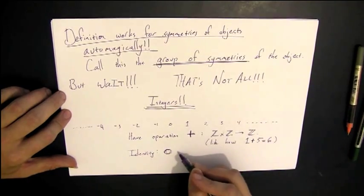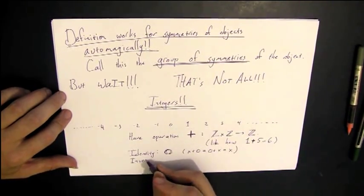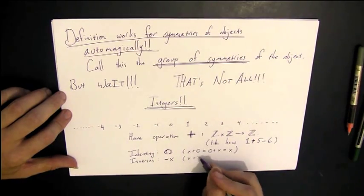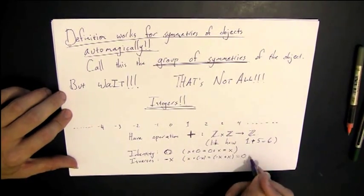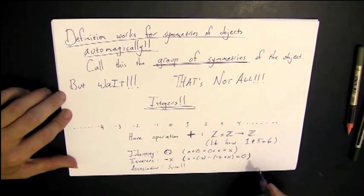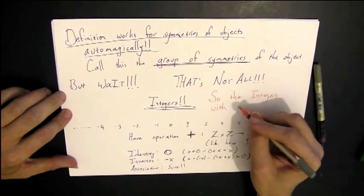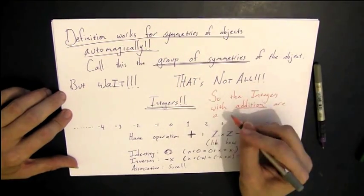There's an identity integer, which we know is 0, where x plus 0 is 0 plus x equals x. Inverses are just negative numbers. If you add a number to the negative number, you get back to 0, back to the identity. And we know that addition of integers is associative. So the integers with the addition operation form a group.